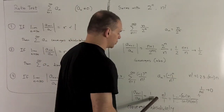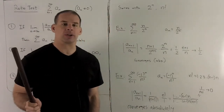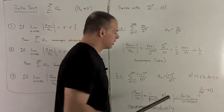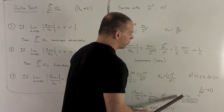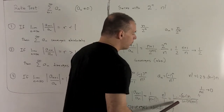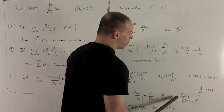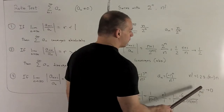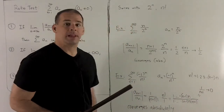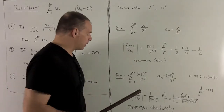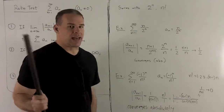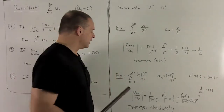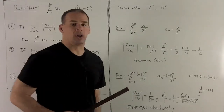That gives us n factorial over (n+1) factorial. The nice thing about factorials when we divide them is there's a lot of cancellation. In the numerator we multiply all numbers 1 through n; in the denominator, all numbers 1 through n+1. All the numbers from 1 to n cancel in pairs, leaving just 1 over n+1. Taking the limit, that goes to 0. So we have absolute convergence, meaning our original series converges, and for free we also get that the series for 1 over n factorial converges.